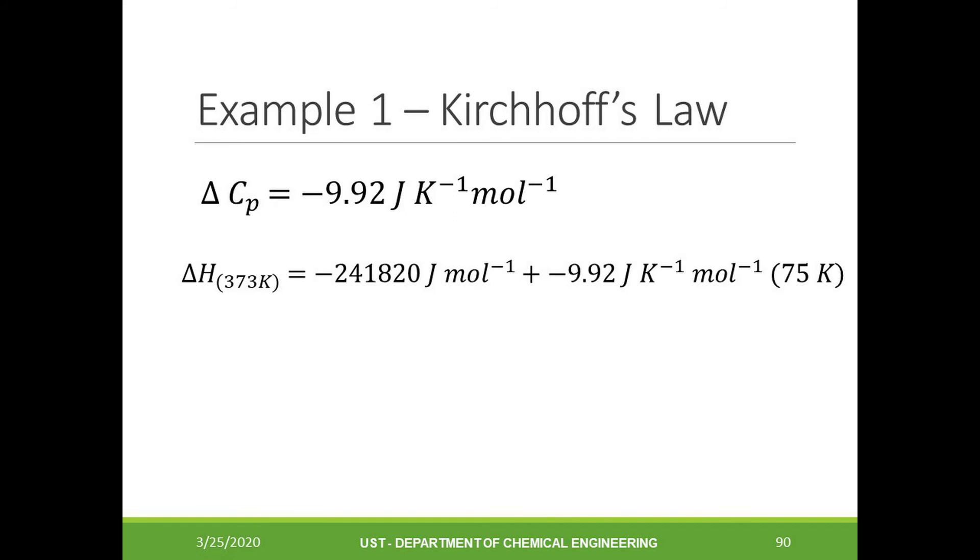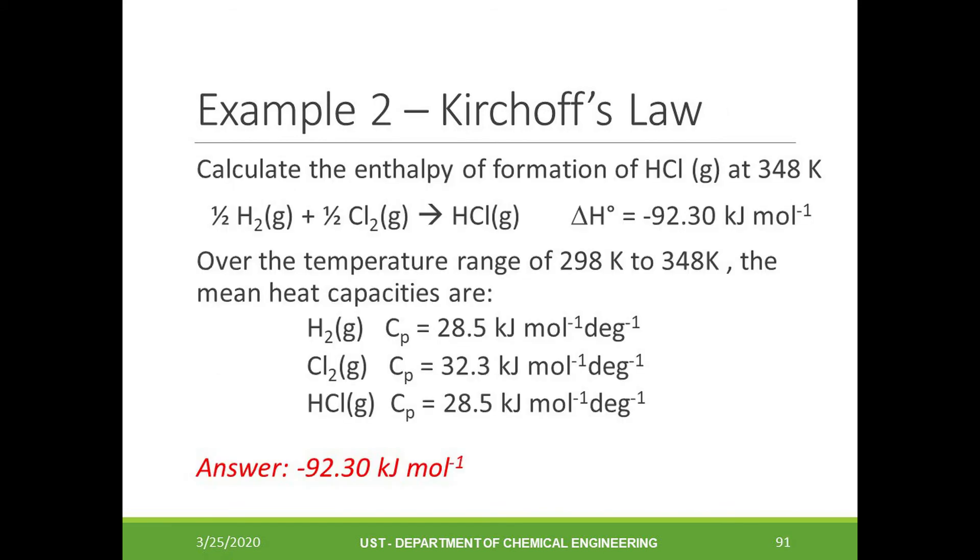Proceeding with our calculations, we will substitute the delta Cp value toward Kirchhoff's equation. Take note that the change in the enthalpy at T1, which is 298 Kelvin, is given in the problem. It then follows that the change in the enthalpy at 373 Kelvin is equal to negative 242.6 kJ per mole. You can also try this problem as an additional exercise.